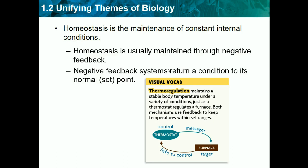A thermostat regulates a furnace, and both mechanisms use feedback to keep temperature within set ranges. Let's say we set the thermostat at 50 degrees Celsius — it sends a message to the furnace which changes the temperature to 50. If the furnace gets too hot or too cold, it sends information back to the thermostat as negative feedback, and then the thermostat decides whether to raise or lower the temperature, which sends it back to the furnace to change and return to the set point.